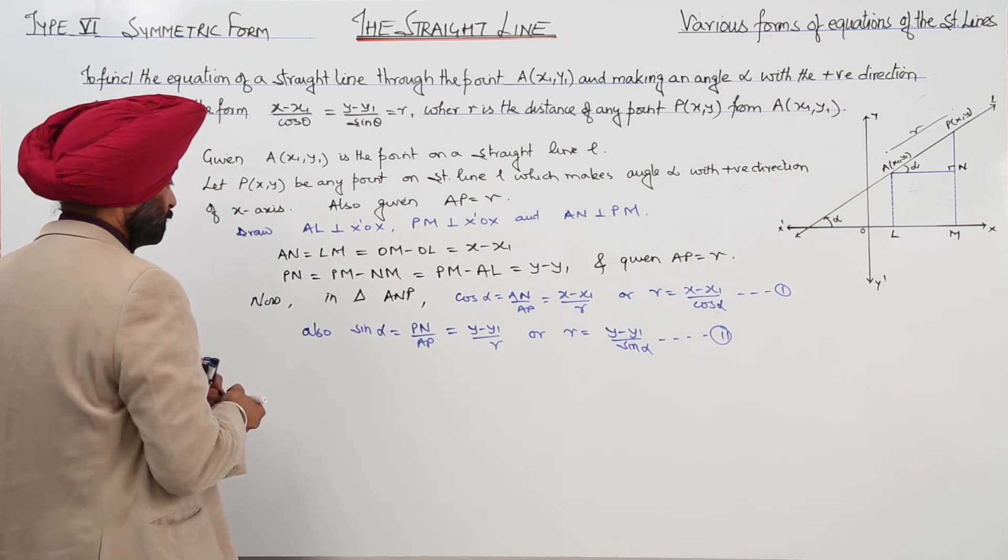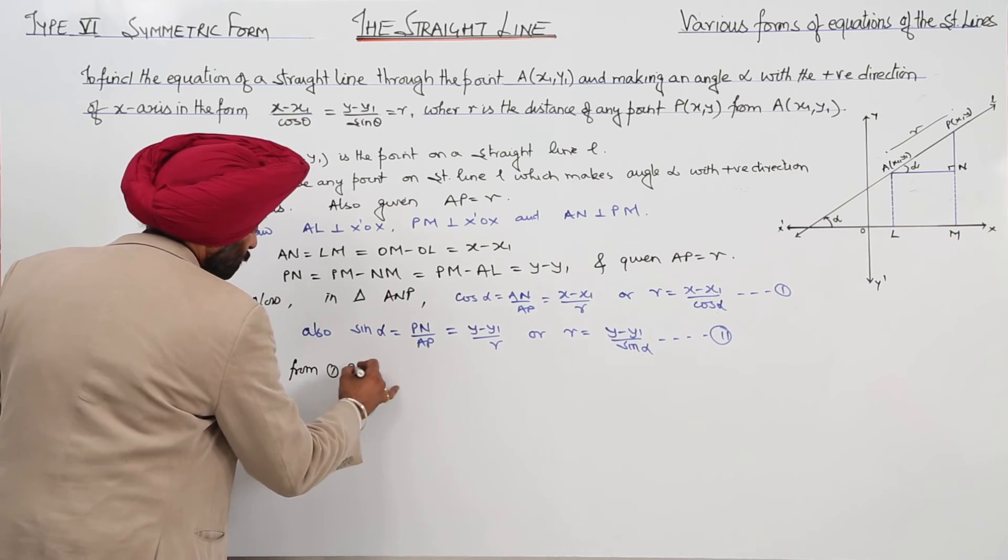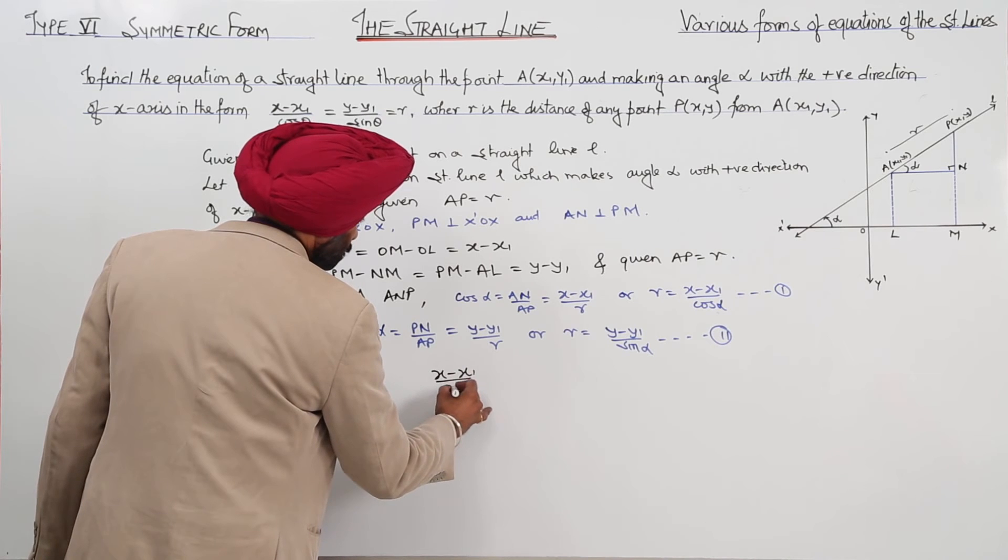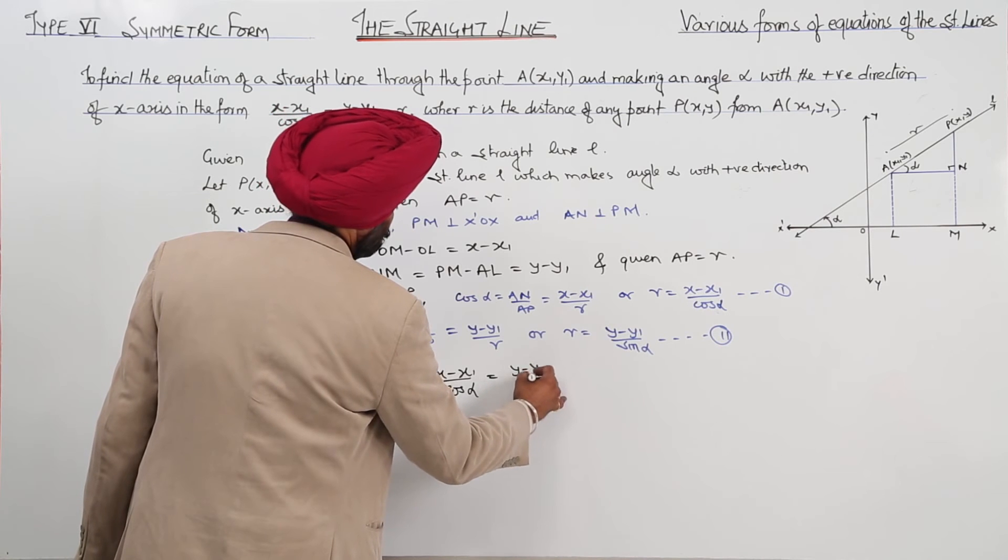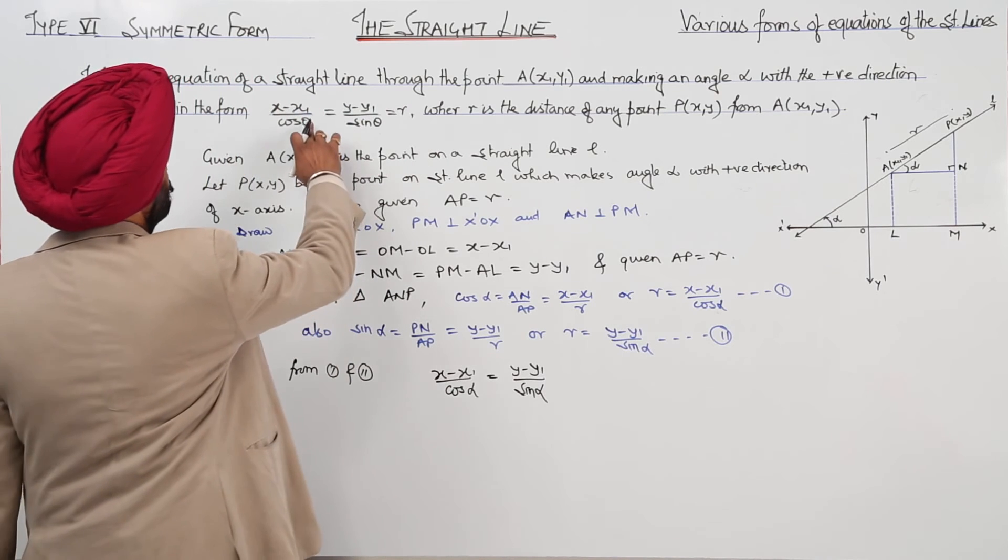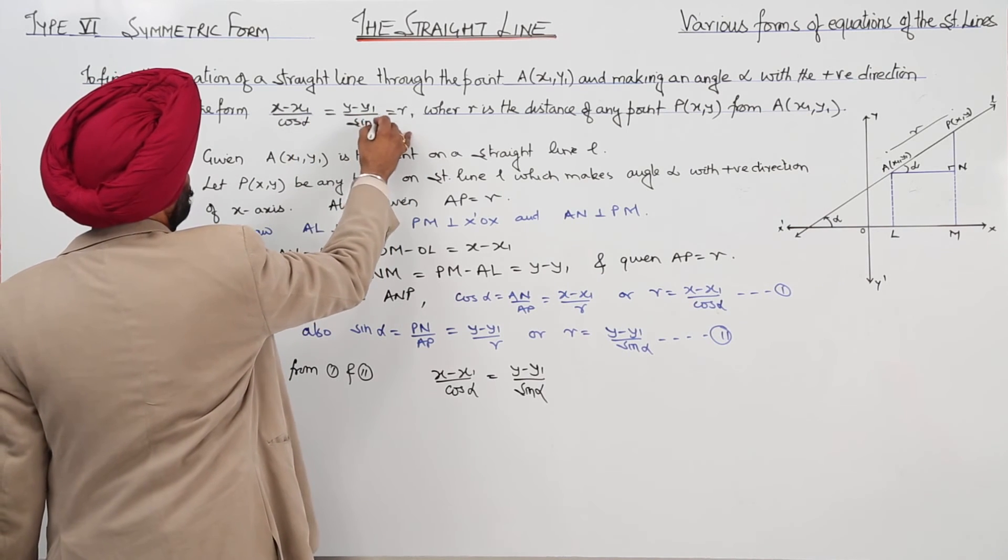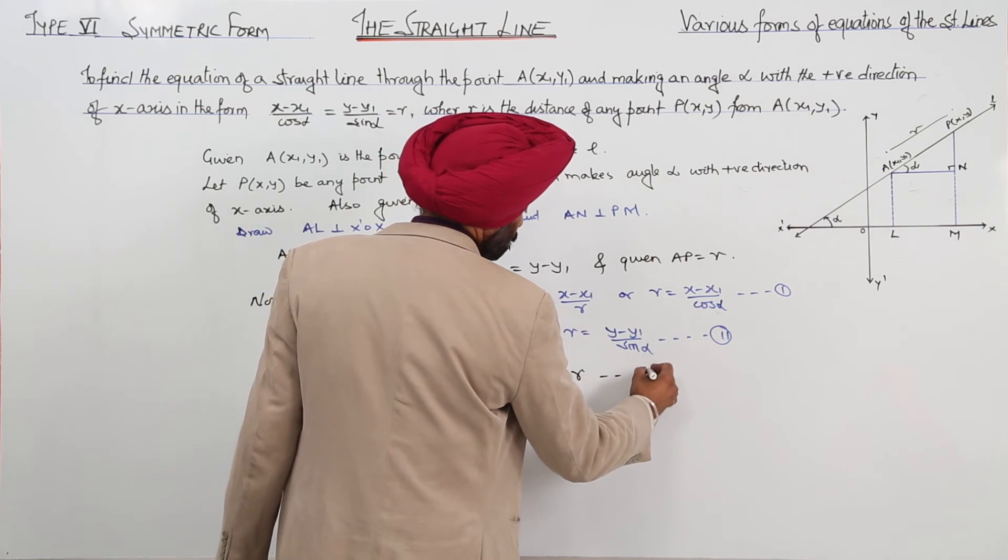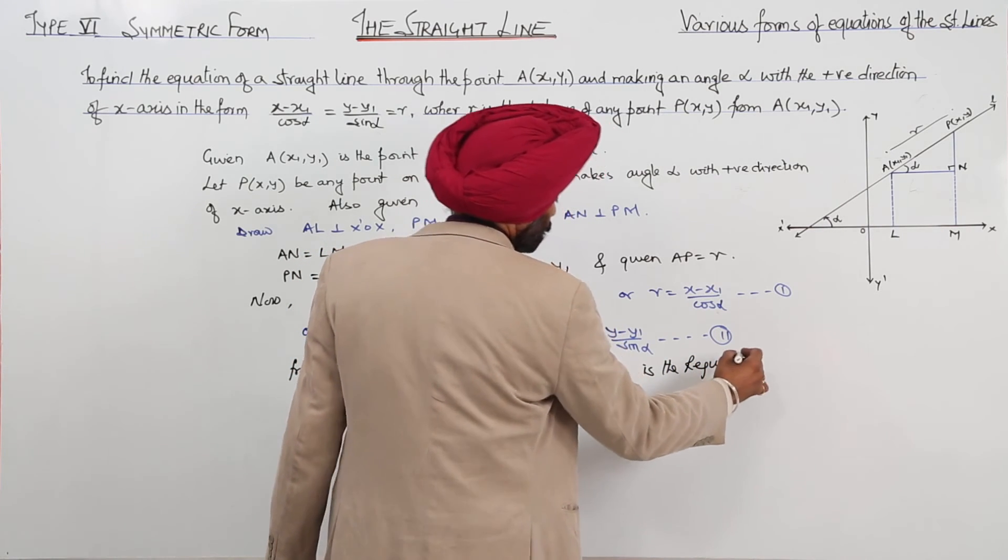Now, from equations 1 and 2, we are having x minus x1 upon cos alpha is equal to y minus y1 upon sin alpha. So, I am sorry, here it will be alpha. This is equal to r, is the required equation.